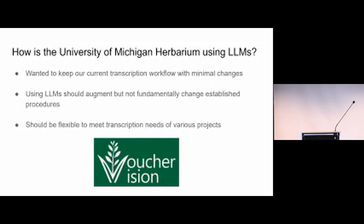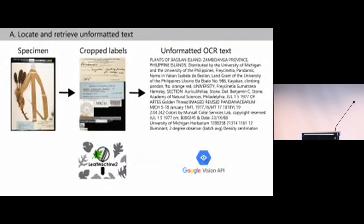At the University of Michigan, we wanted to design a transcription workflow that minimized changes to our current workflow—using large language models in a way that augments but doesn't fundamentally change our established procedures. It should also be flexible for different projects with specific requirements. The first step is extracting the labels from the image using Leaf Machine 2 to crop out the labels and put them into a single image. We submit that image to an optical character recognition algorithm—in this case, Google Vision API—and it returns a pretty messy group of words. This is why large language models are so important: they can help transform this text into something we can actually use.